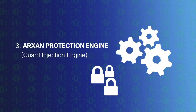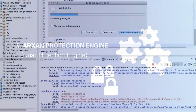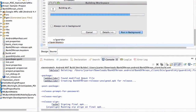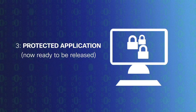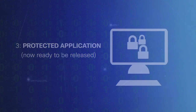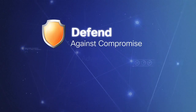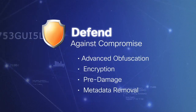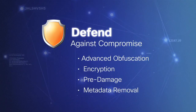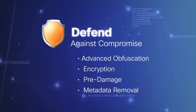The ArcSan protection engine automates the injection of guards in the application binary. This injection can be randomized such that each binary build looks different. As a result, you have a protected version of the app that's now ready for release and deployment. Guards can be leveraged to defend against compromise by obfuscating or scrambling the code, encrypting or pre-damaging parts or all of the application statically or at runtime.